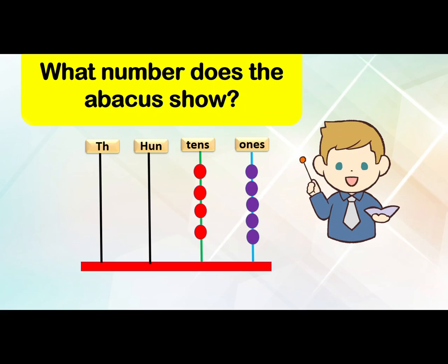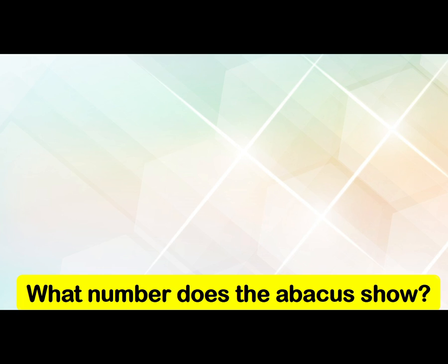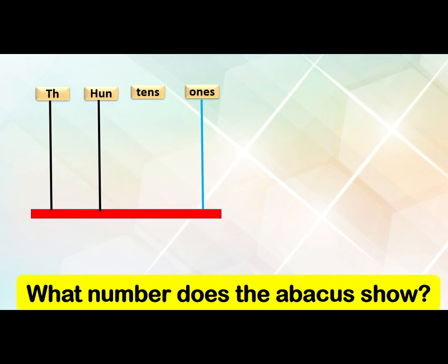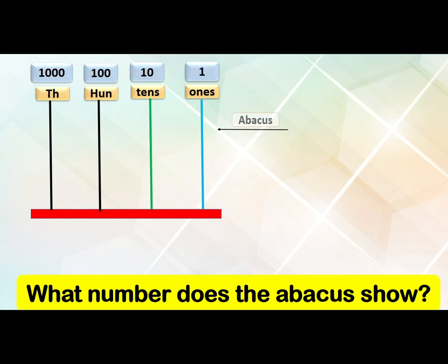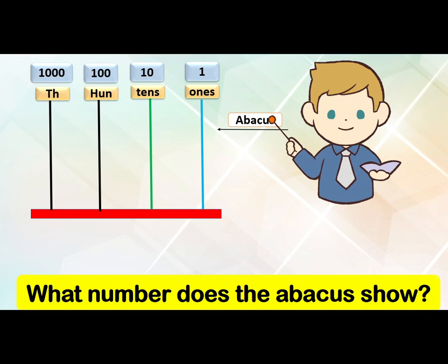Hi friends, how are you today? We are going to learn what is an abacus and what number does the abacus show. Look at here — this is an abacus. It has four rods: ones, tens, hundreds, and thousands.